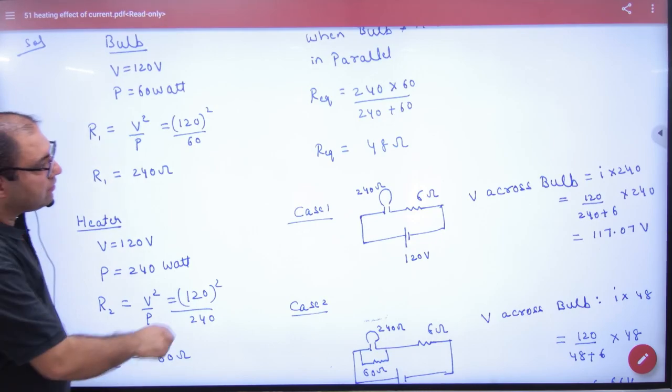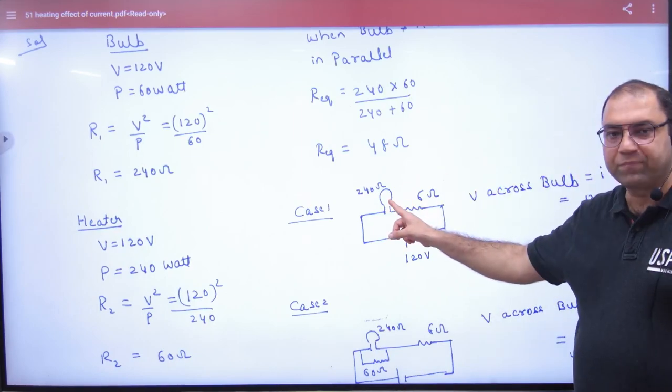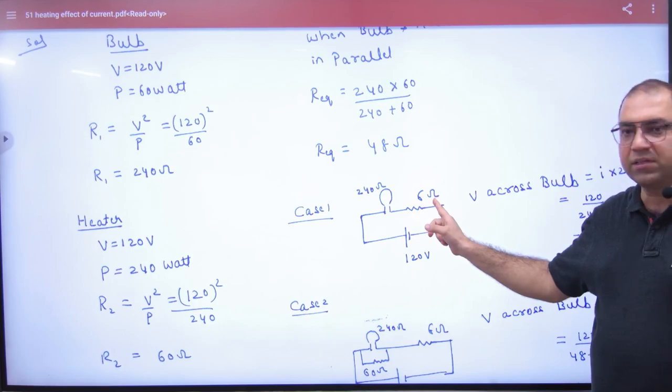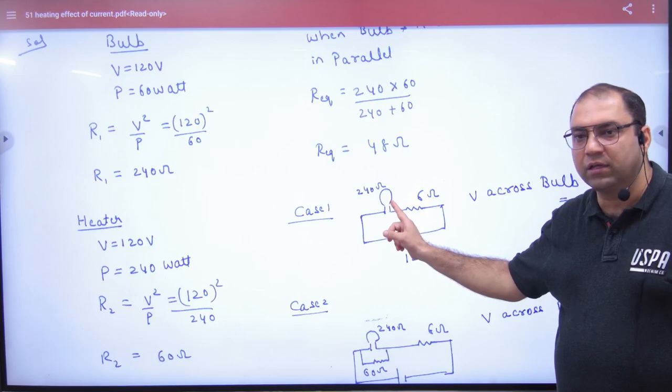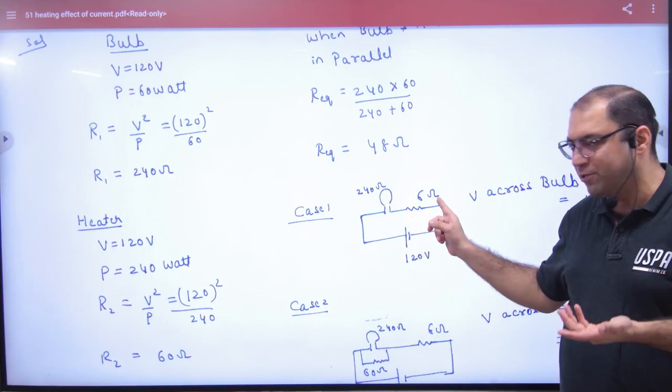Now, in case number one, when there is just the bulb. What is the resistance of the bulb? And the wire resistance is 6 ohms. The voltage across the bulb will be less than 120, because some voltage will drop across the wire resistance too.